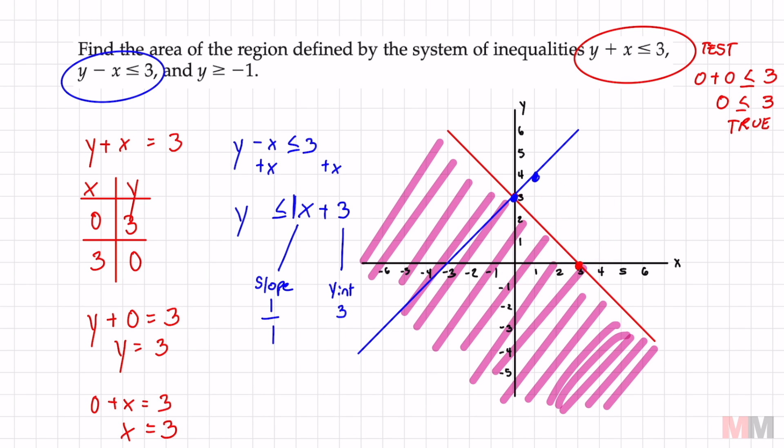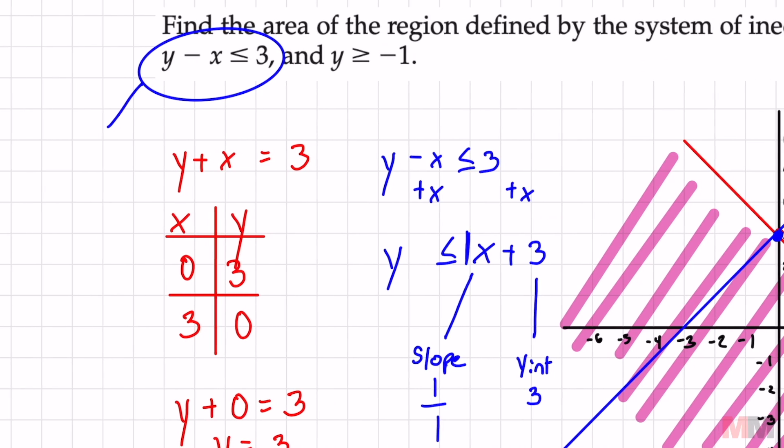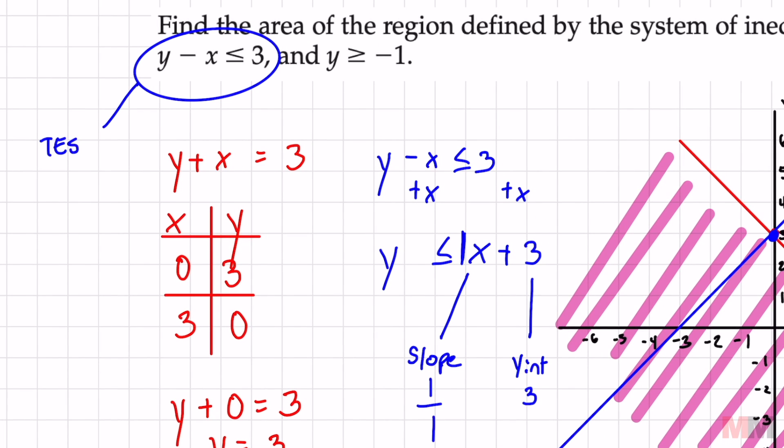I will show the work right here. So my test point if I plug it in zero minus zero is less than or equal to three. That zero is less than or equal to three which is true.